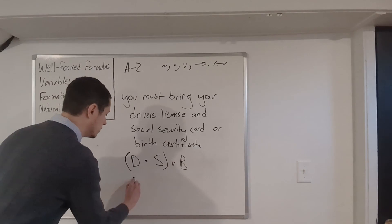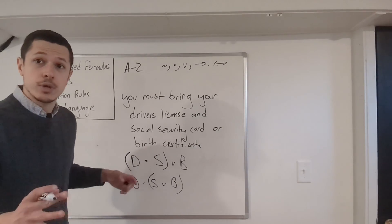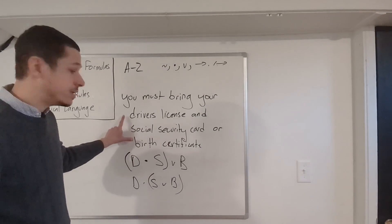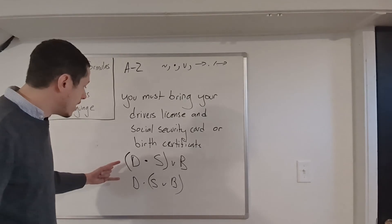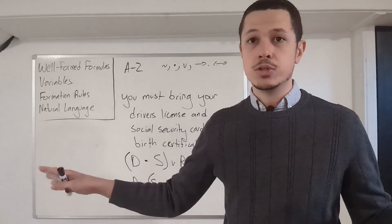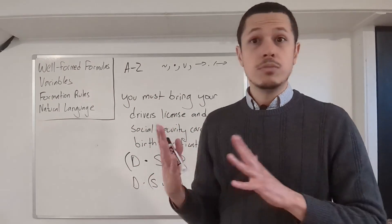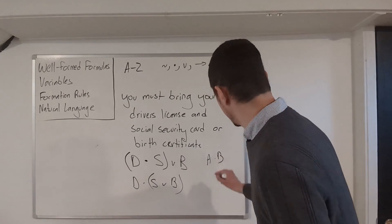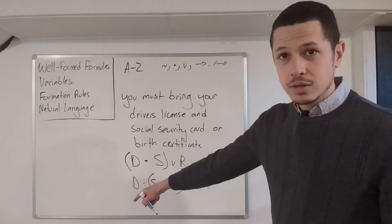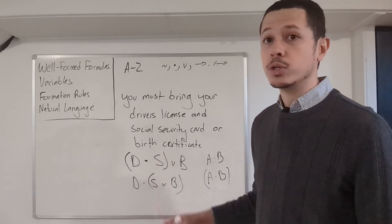This needs some parentheses. If we were to write this out in statement logic, parentheses would really help disambiguate it. Using D for driver's license, S for social security, and B for birth certificate: 'D and S or B' is not a well-formed formula — it needs parentheses to disambiguate. You may write this either as (D and S) or B, or as D and (S or B), in order to get a well-formed formula. If you have only two statement letters with a single logical connective, there's no need for parentheses. But if you have more atomic statement letters, you're going to have to add parentheses somewhere in order to disambiguate.